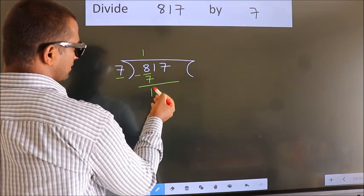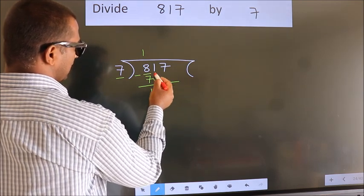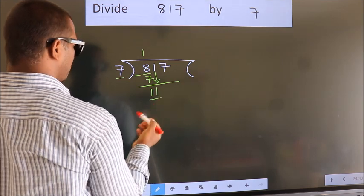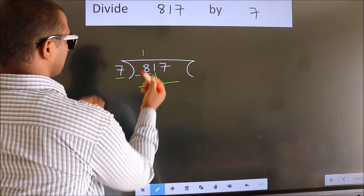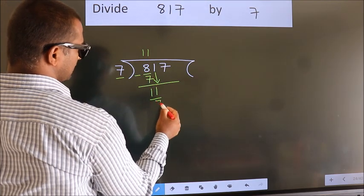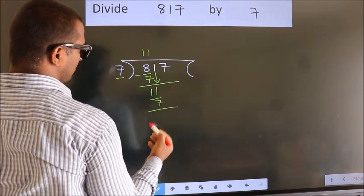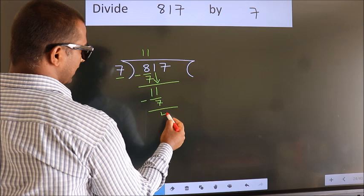After this, bring down the beside number, so 1 down, so 11. A number close to 11 in 7 table is 7×1=7. Now we subtract, we get 4.